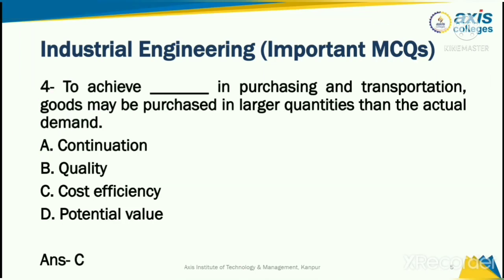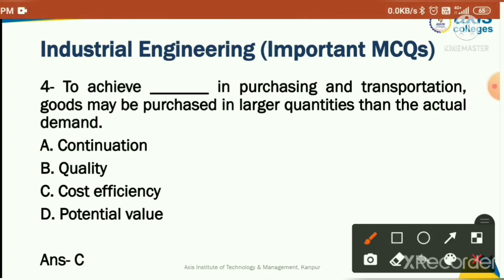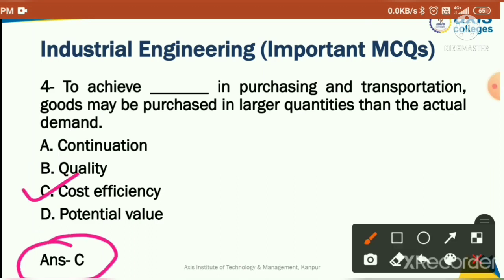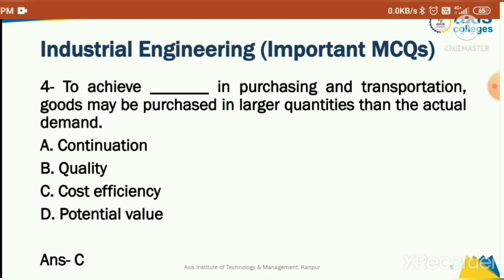To achieve what — in purchasing and transportation — goods may be purchased in larger quantity than the actual demand? Options: continuation, quality, cost efficiency, or potential value. The correct answer is option C: cost efficiency. To achieve cost efficiency, goods may be purchased in large quantities exceeding actual demand.